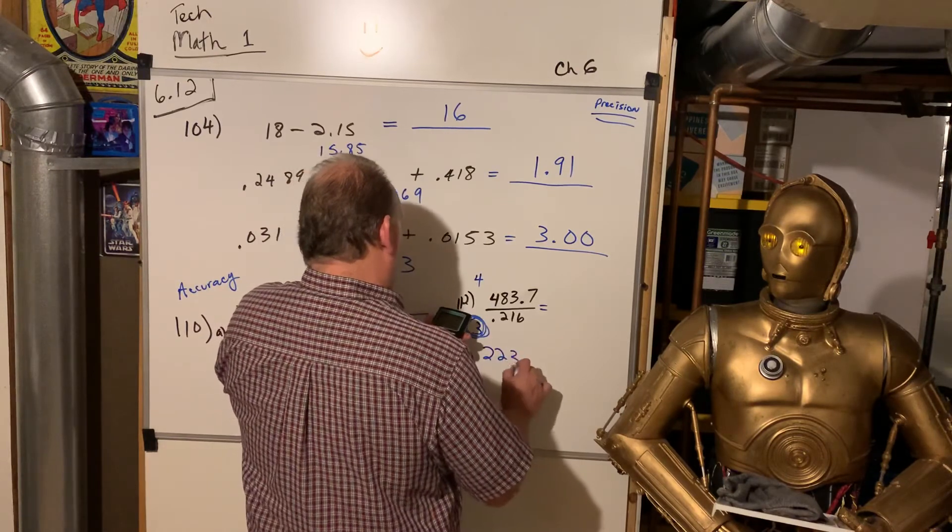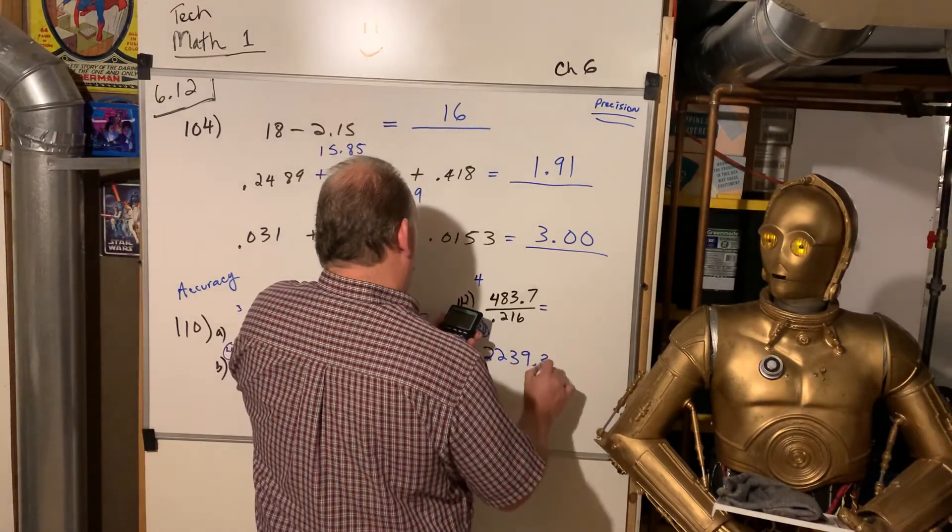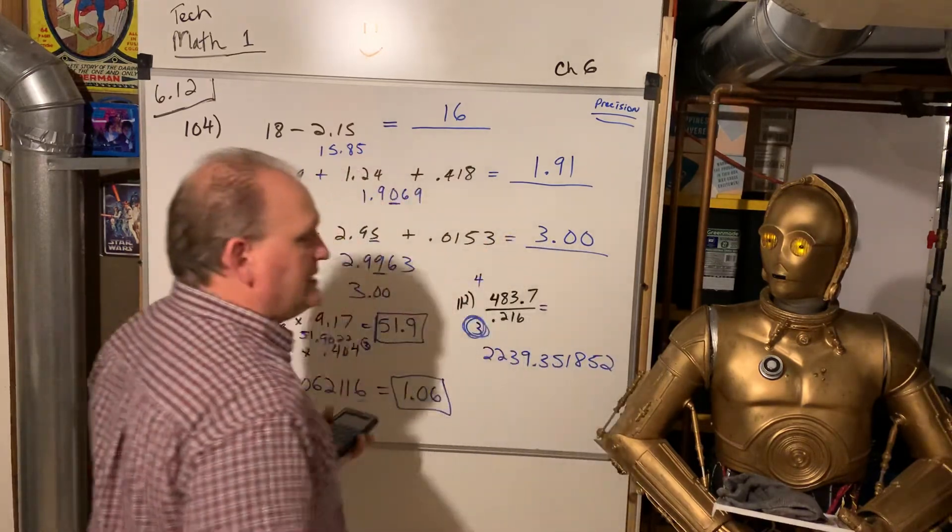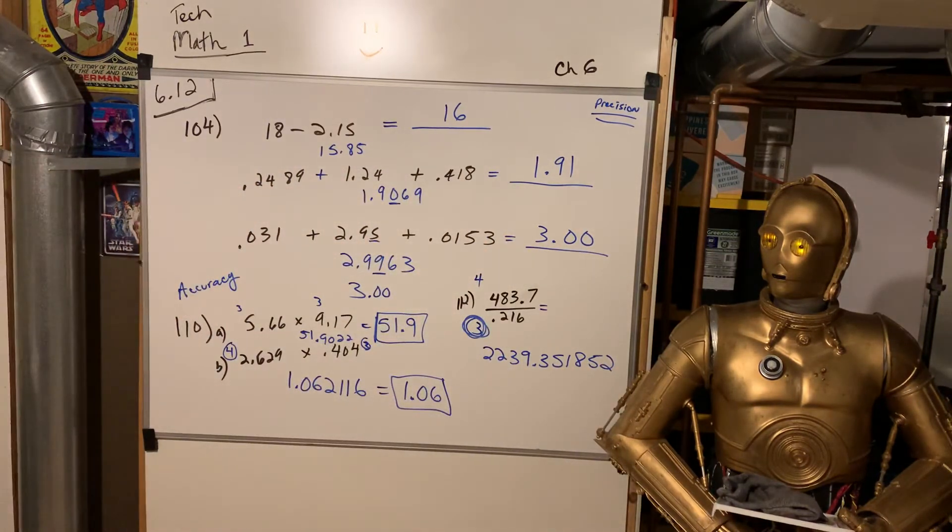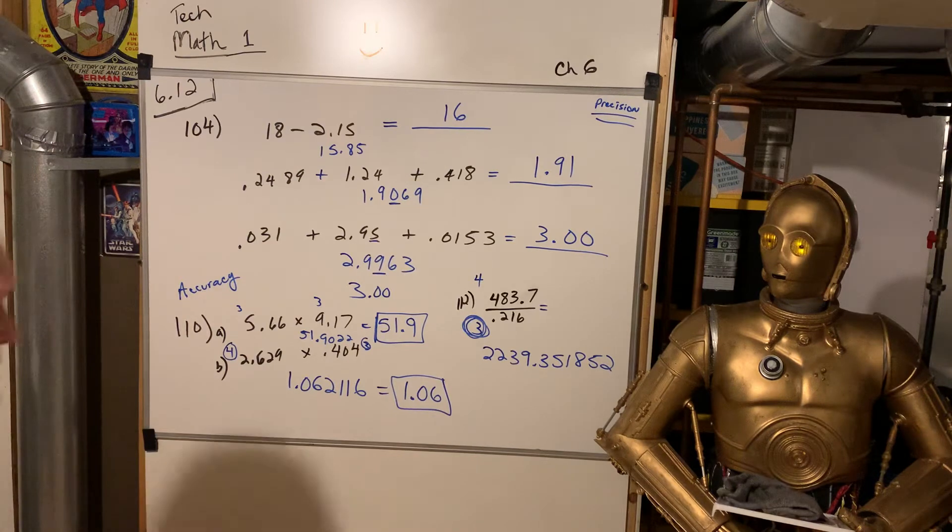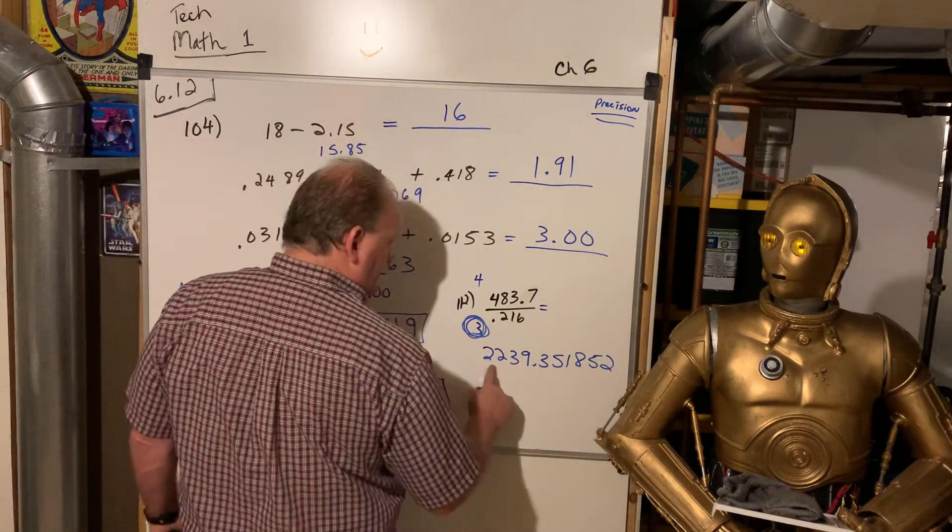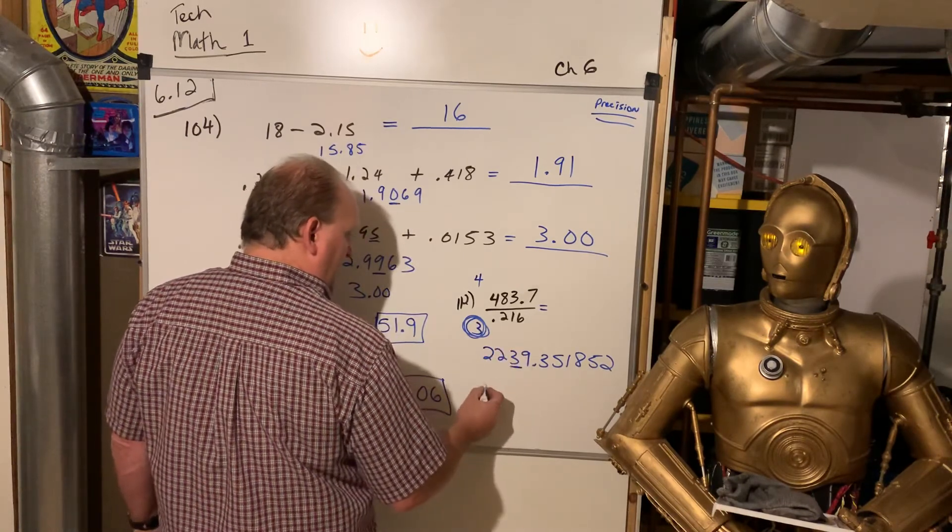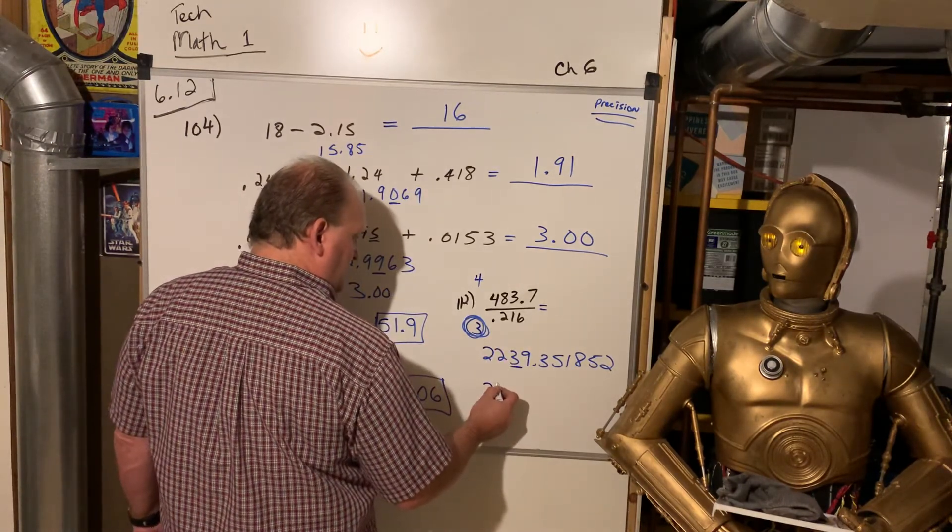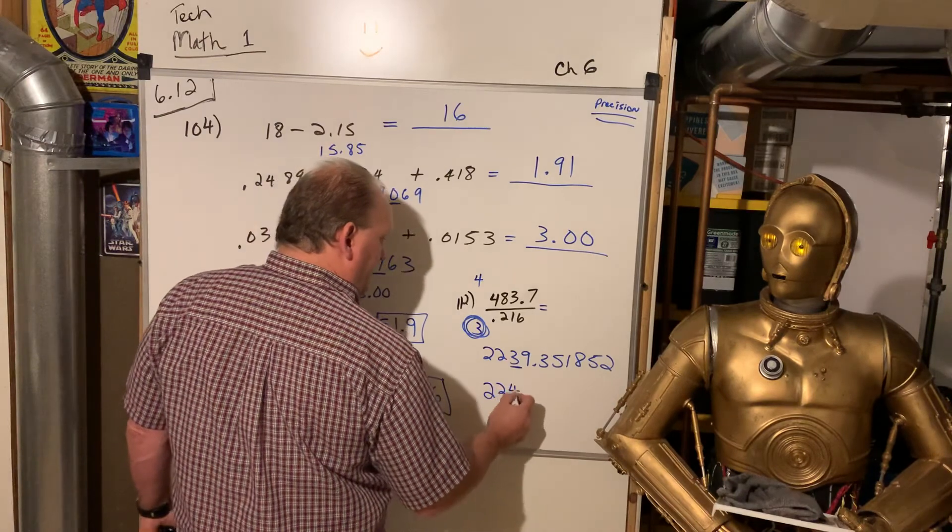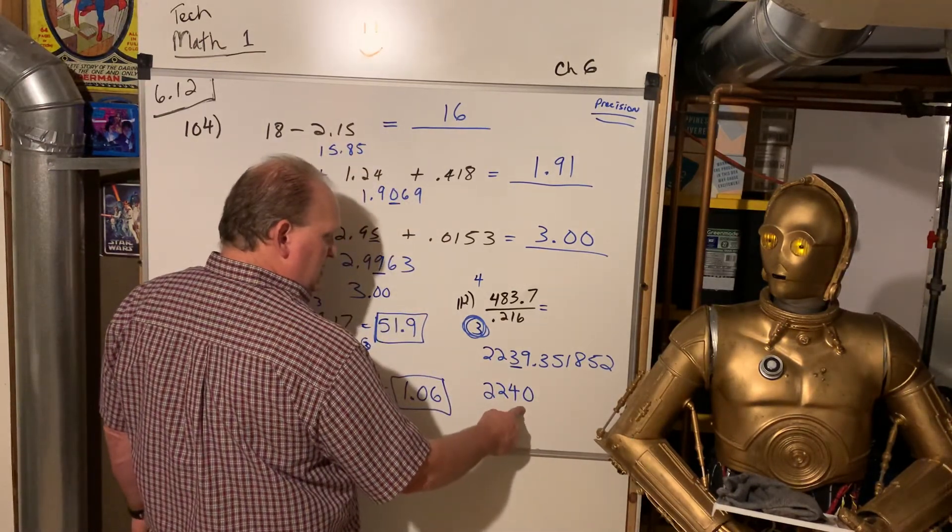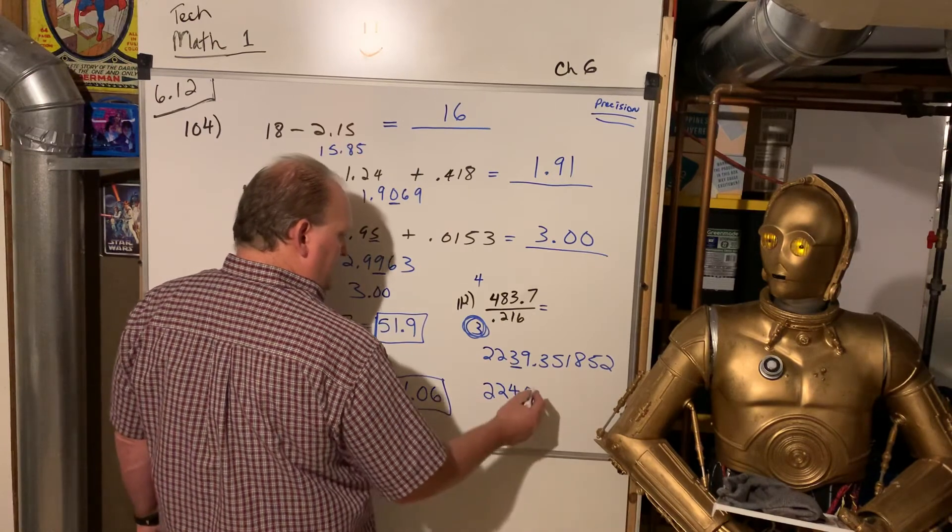2, 2, 3, 9.351, 8, 5, 2. So, this is quite the dilemma, because we only get 3 significant digits, which means I'm going to have to take that and round it in the 10 spot. So, 2,240, that leaves me with just 3 significant digits, because the 0 doesn't count as significant.